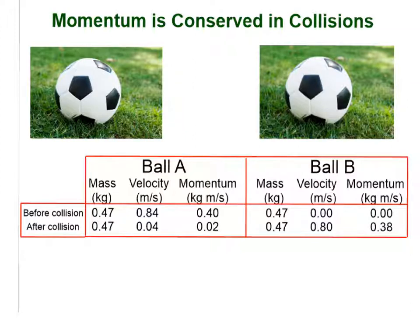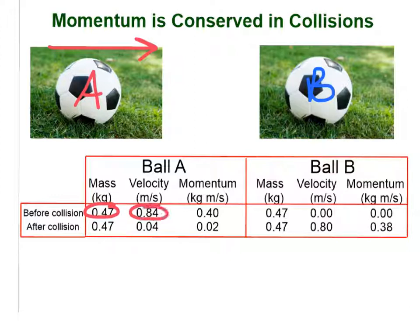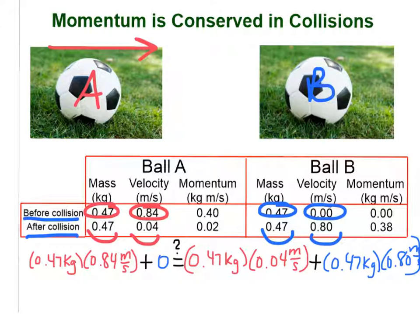So momentum is conserved in collisions. Let's take a look at a little example here. Let's call this soccer ball A, and it has some initial velocity. And this here we'll call soccer ball B, and it is at rest. We have a collision. We know that the mass times the velocity for ball A plus the mass times the velocity for ball B, which would be zero, before the collision should equal the mass times the velocity for ball A plus the mass times the velocity for ball B after the collision. When we plug these numbers into the calculator, we indeed find that our momentums are equal. So our total momentum initial is equal to our total momentum final.